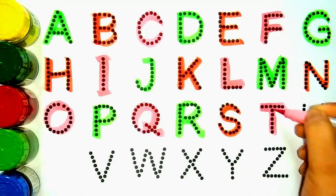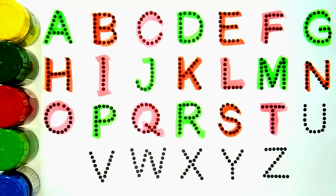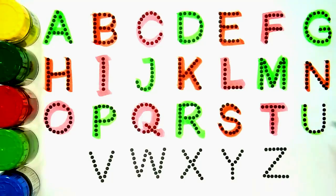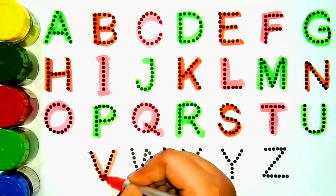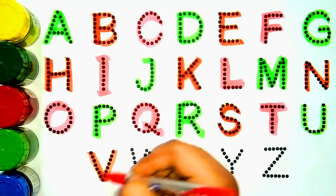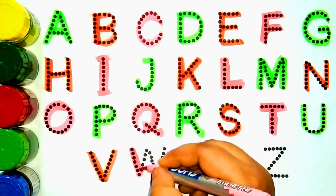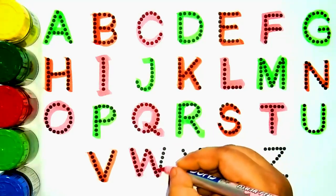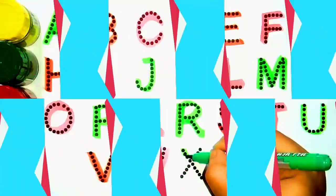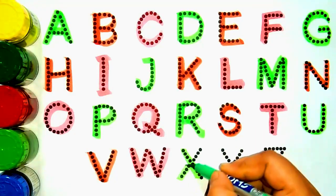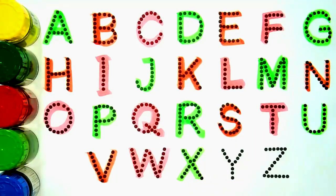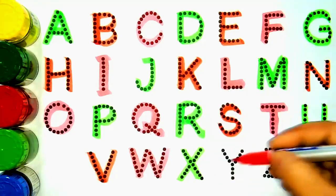T, T for Trophy, T for Trophy. Light green colour. U, U for Unicorn, U for Unicorn. Orange colour. V, V for Violin, V for Violin. Light pink colour. W, W for Watermelon, W for Watermelon. X, X for Xylophone, X for Xylophone. Orange colour.